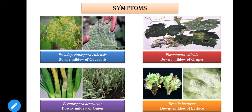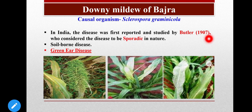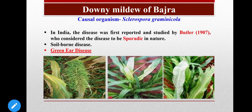The Downy Mildew of Sorghum, Maize, and Bajra have some different characteristics, which we will discuss in separate slides. Let's start with the Downy Mildew of Bajra. It is caused by the pathogen Sclerospora graminicola. This disease was first described in India by Butler in 1907, and at that time it was considered a sporadic disease — meaning disease incidence is occasional in nature.